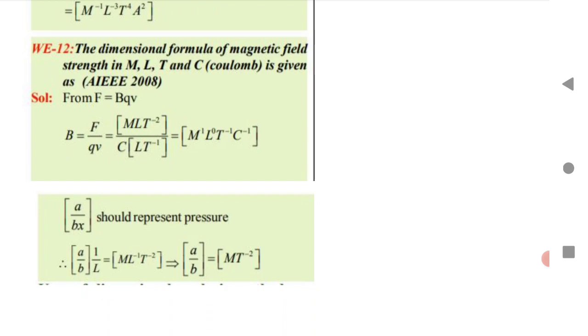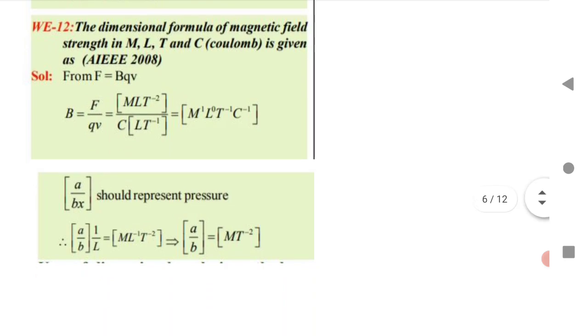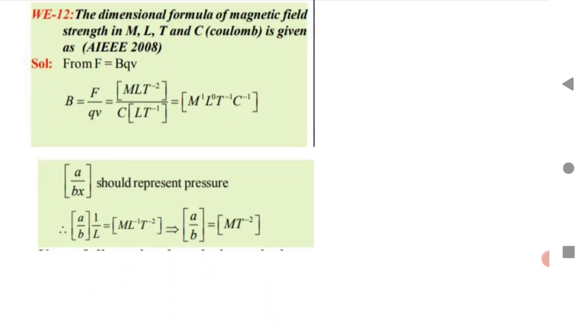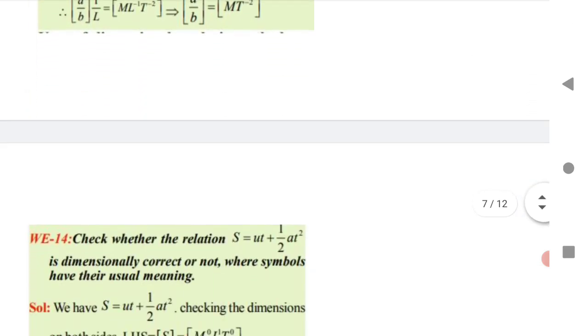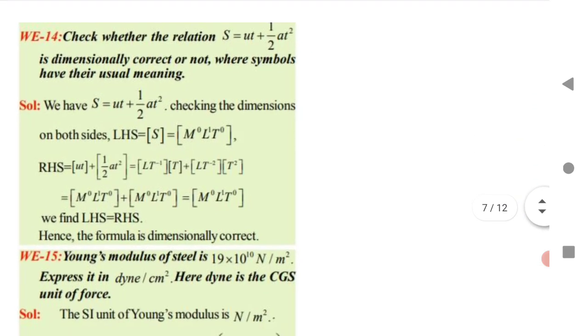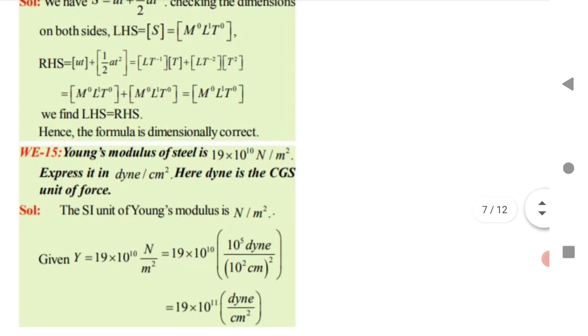The dimensional formula of magnetic field strength B: use the force formula F = BqV. So B = F / (qV). Substitute dimensions of force, charge, and velocity to get the dimensional formula. You can also use dimensional analysis to check whether a given relation (e.g., x = ut + ½at²) is dimensionally correct by substituting dimensions on both sides.